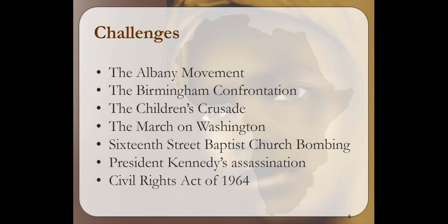The Civil Rights Movement faced challenges. The Albany Movement began in the summer of 1961. The goal of the movement was desegregation, but this movement was seen as a failure. The police chief in Albany, Georgia was familiar with the tactics that activists used. He instructed his police force to avoid engaging in violence in order to avoid the intervention of the federal government. As a result, the Albany Movement did not get the attention of the federal government and was seen as a failure by King.